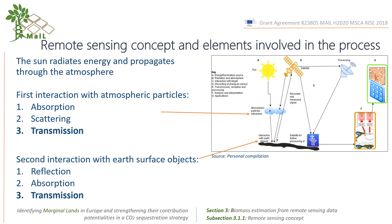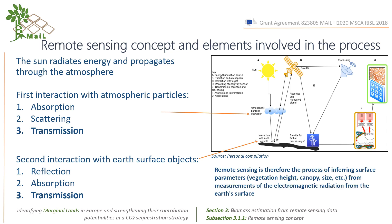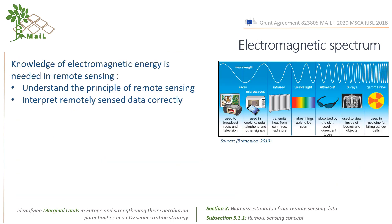At the ground receiving point, the data will be processed in the form of text and digital media for statistics generation. From the diagram, it can therefore be concluded that remote sensing is the process of inferring surface parameters from measurements of the electromagnetic radiation from the Earth's surface.